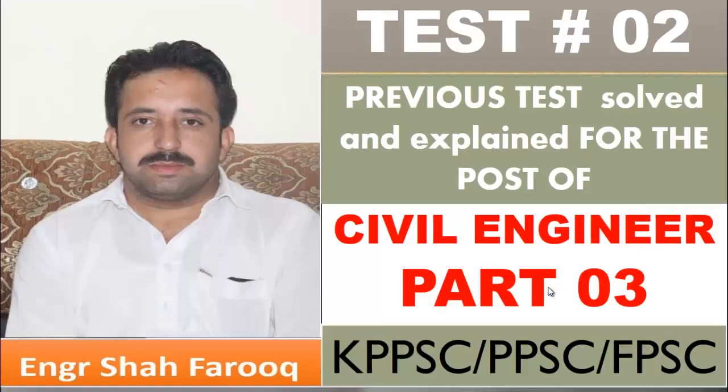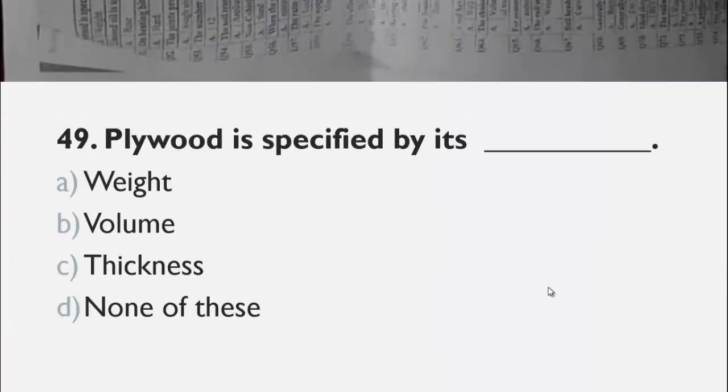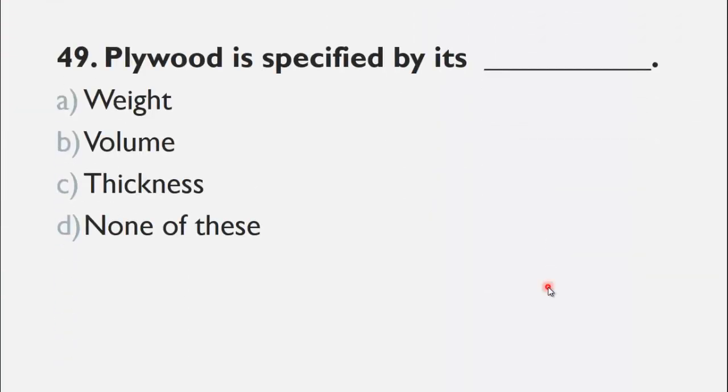MCQ number 49 is: Plywood is specified by its ___. The choices are A) weight, B) volume, C) thickness, and D) none of these. Generally plywood is specified by its thickness, so the right choice for this question is C, thickness of the plywood.